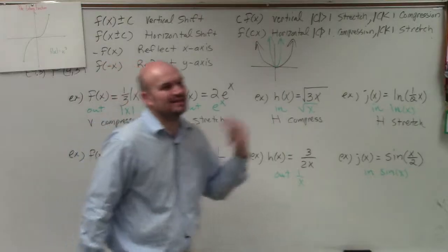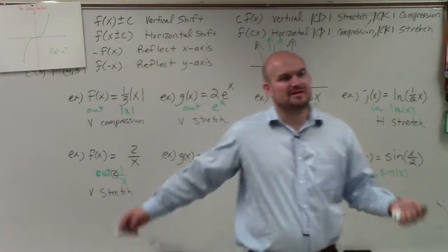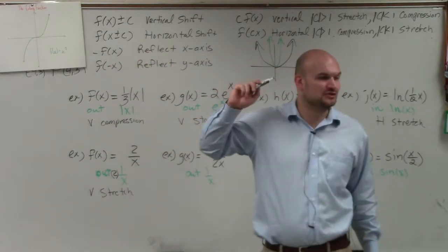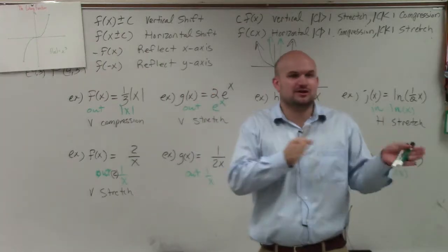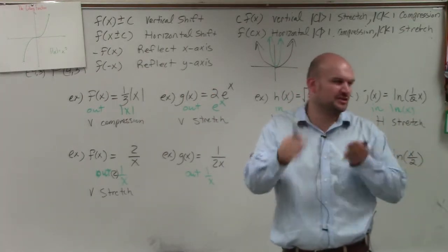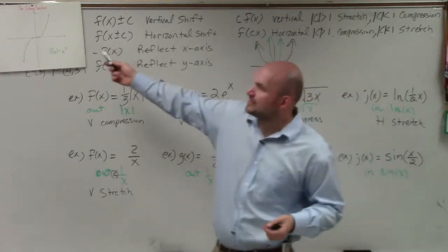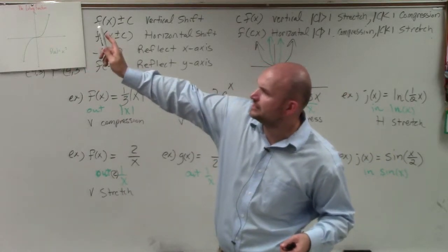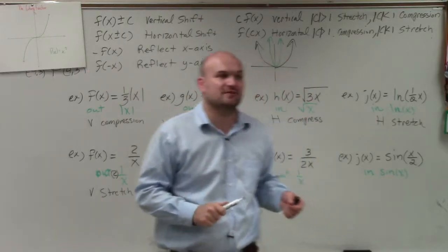Now, the reason why you could have done in or out outside of these, because 1 over x is an odd function. So it actually, it can go either. It doesn't actually matter if it's vertical or horizontal. It's actually either or, because it's an odd function. The same thing works for the identity function.